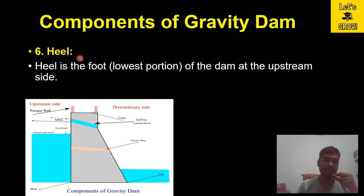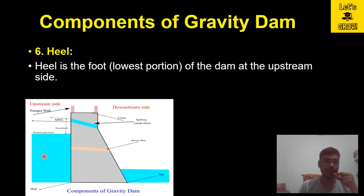The sixth component is the heel. The heel is the foot or lowest portion of the dam at the upstream side. At the bottom portion of the upstream side, this corner or lower section is known as the heel of the dam.